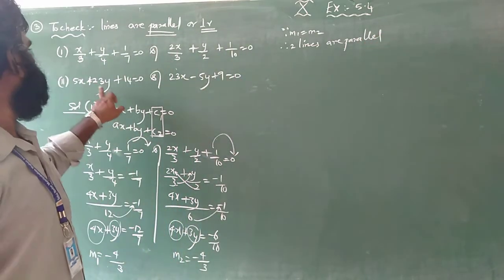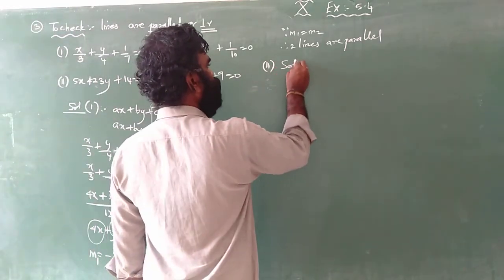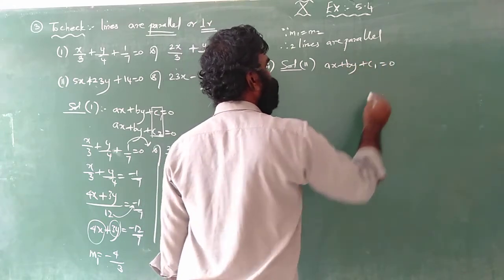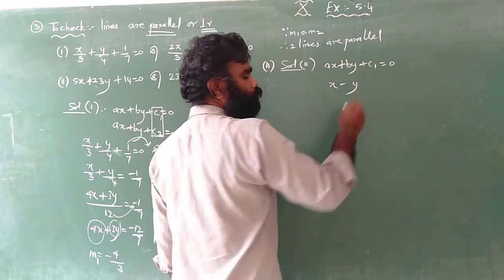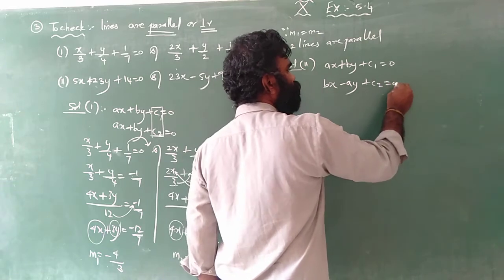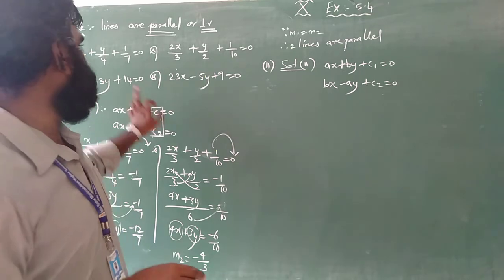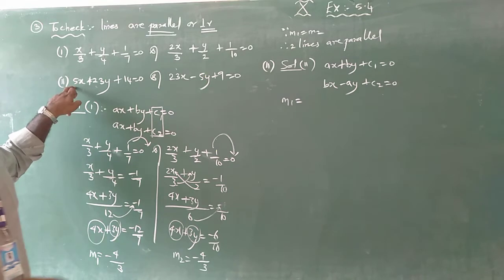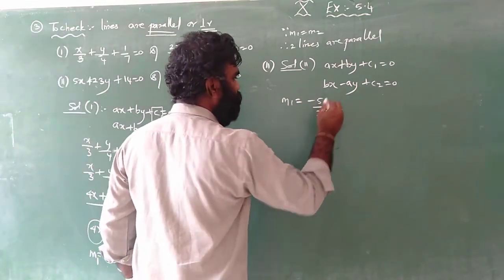Now take the second subdivision: the solution for checking perpendicular lines. The formula is a1 x plus b1 y plus c1 equals zero and a2 x plus b2 y plus c2 equals zero, with the perpendicular condition being m1 times m2 equals minus 1. First check the slope: m1 equals minus coefficient of x over coefficient of y. The coefficient of x is 5 and coefficient of y is 23.